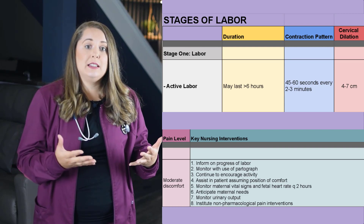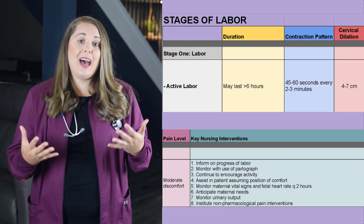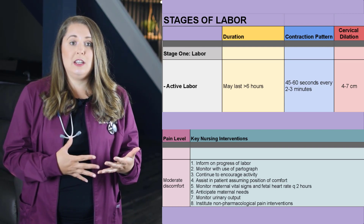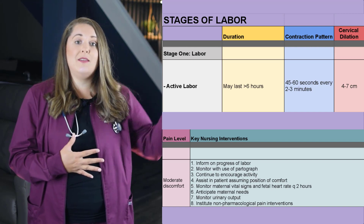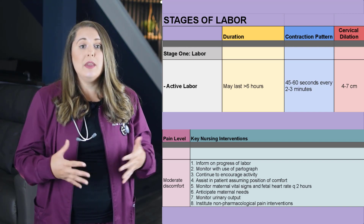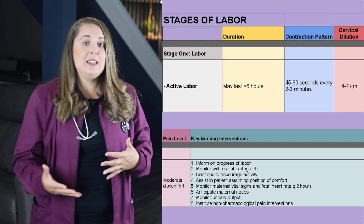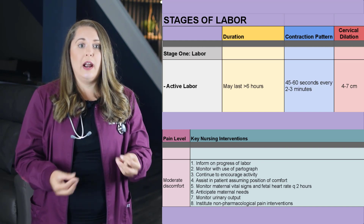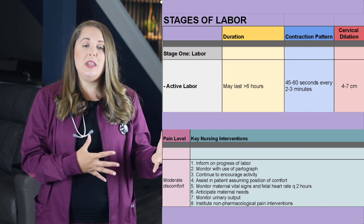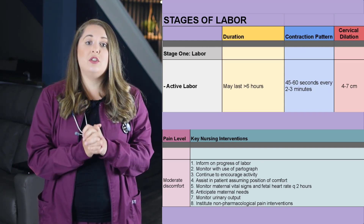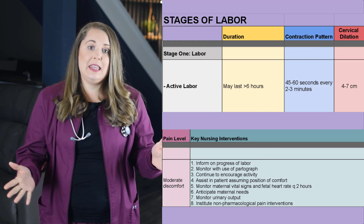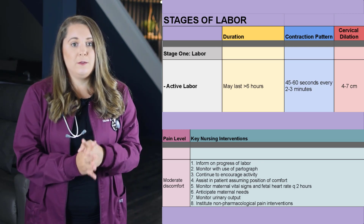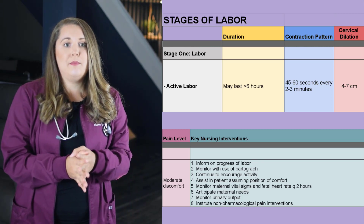The active phase starts from four centimeters cervical dilation up to seven centimeters cervical dilation. During this phase, contraction intensity is now stronger, the interval between contractions shortens, and the duration lengthens. This is where the true pain and discomfort is first felt by the mom.